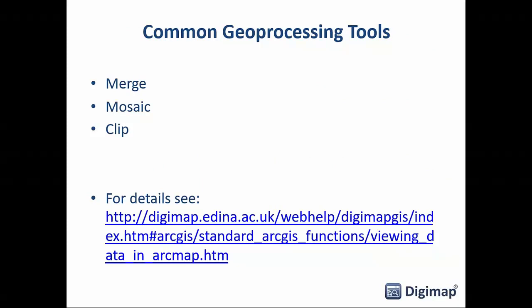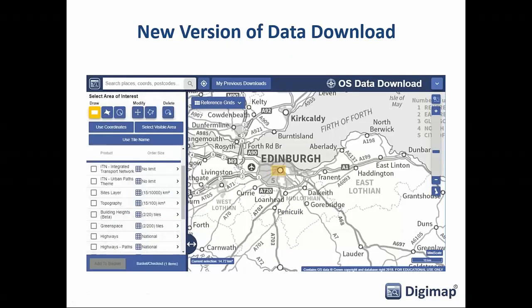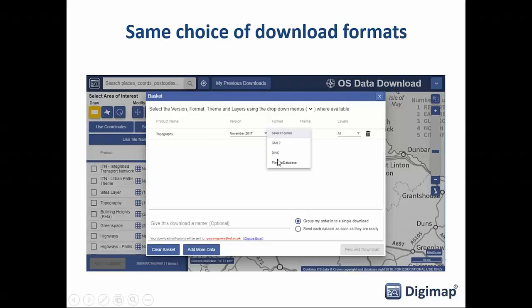There are other standard ArcGIS tools for merging, mosaicing, and clipping data — see our help pages for guidance. The new version of data download (currently in beta) looks similar to the existing version and does the same things — you still choose formats like GML, DWG, or file geodatabase from the basket. We're also adding enhancements including clipping data on export, so you may not need to clip within the GIS itself.